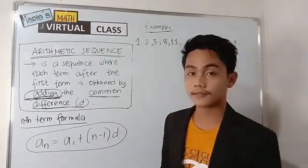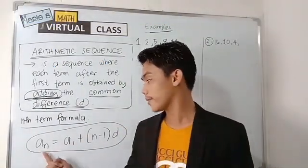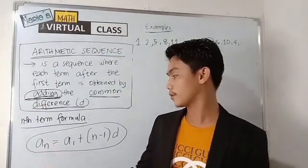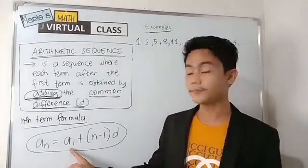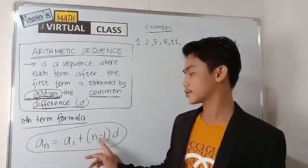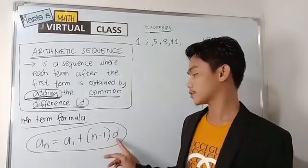And the nth term formula is a sub n or the nth term is equal to a sub 1, the first term, plus the difference of n and 1 times the common difference.